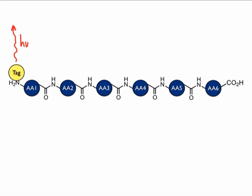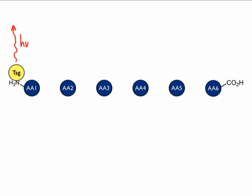We then subject the peptide to hydrolysis conditions, which produce a soup of amino acids, only one of which — the N-terminal residue — will appear tagged. To isolate the tagged amino acid, we use chromatography. Finally, spectroscopic analysis of the separated amino acids reveals which one possesses the tagging group.